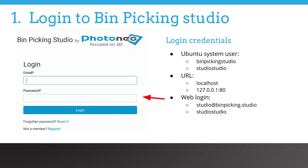Bin Picking Studio runs on the vision controller — a dedicated device with sufficient power to support all required services like image pre-processing, object localization, path planning and collision calculation. The operating system is Ubuntu Linux. The user will log on with the username 'bin picking studio' and password 'studio studio'. The web service runs on the local machine host, and the user account for the web is studio@binpicking.studio with the same password.